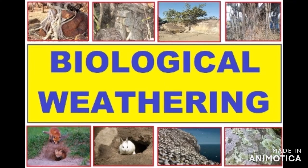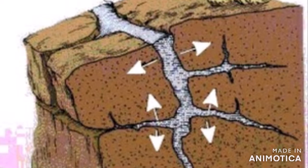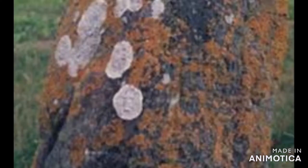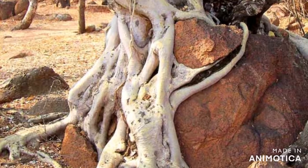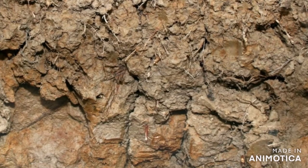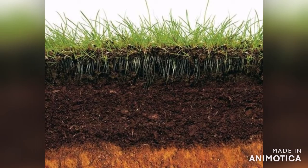Now let's see what is biological weathering. Biological weathering is caused by the action of plants and animals as they grow, nest, and burrow. The lichens growing on rocks discharge certain chemicals that break down the rocks into a fine powder and form a thin layer of soil. Mosses also develop on the rock surface and further break the rock.